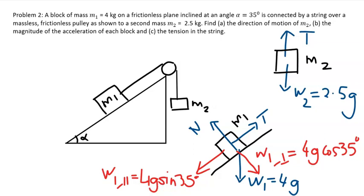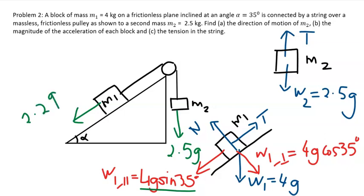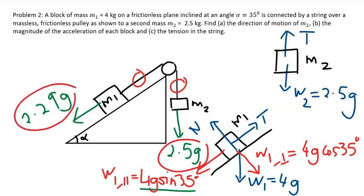To determine which direction m2 moves: m2 is pulled downward with a force of 2.5g. The force pulling m1 down the plane is 4g·sin35° = 2.29g. Since the tensions in the string are equal and 2.5g is greater than 2.29g, m2 will accelerate downward. Consequently, m1 will accelerate up the plane.